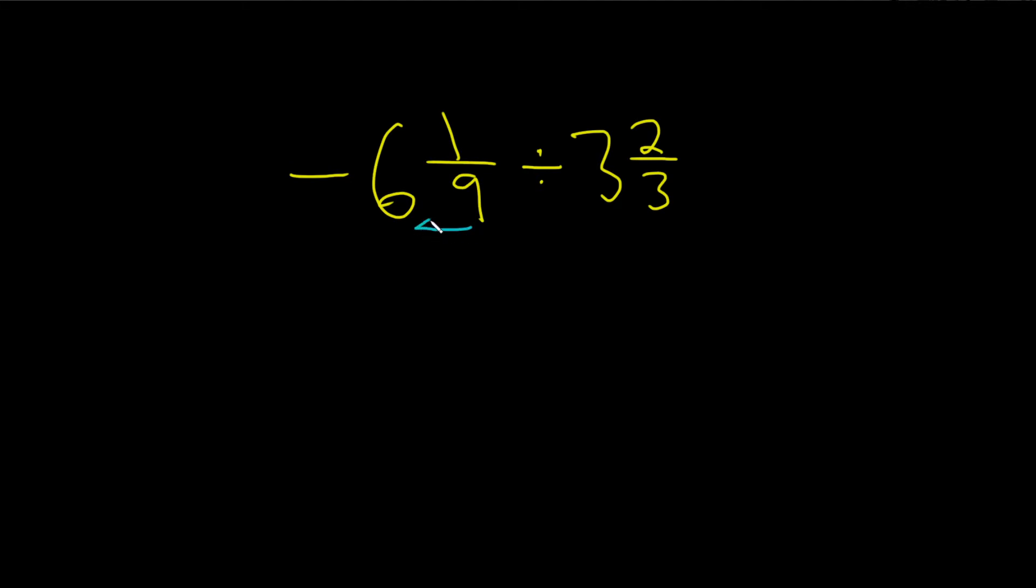You do 9 times 6, which is 54, and then you add the number up top. So plus 1, that's 55. So 9 times 6 is 54, 54 plus 1 is 55. Then you put the 55 up top, and then you keep the 9 on the bottom, and then you have a minus sign.